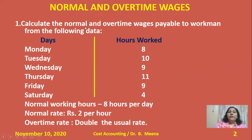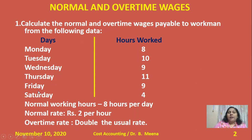We need to calculate normal time wages as well as overtime wages. For normal time wages, we must know the normal working hours for each day. The normal working hours from Monday to Friday are 8 hours, and Saturday is half, that is 4 hours. We need to calculate normal time wages for these hours based on the rate per hour given in the problem.